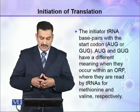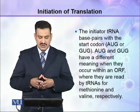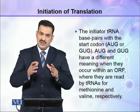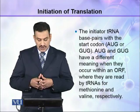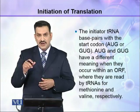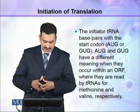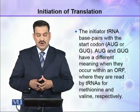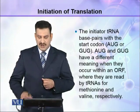The initiator tRNA base pairs with the start codon. The start codons are AUG or GUG. When AUG or GUG appear within the open reading frame, they code for different amino acids — for example, AUG codes for methionine, while GUG codes for valine.